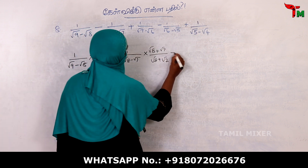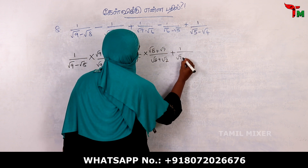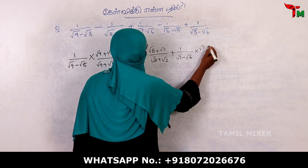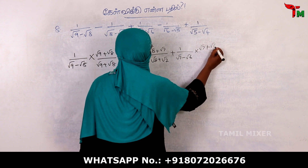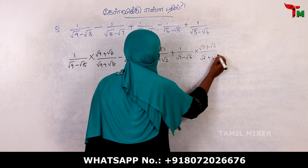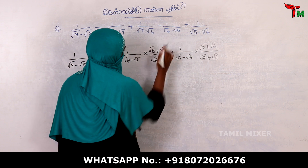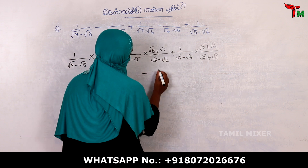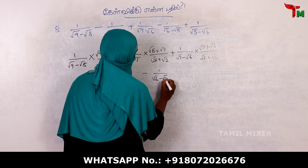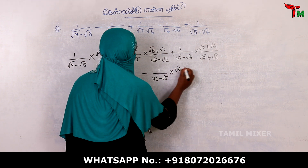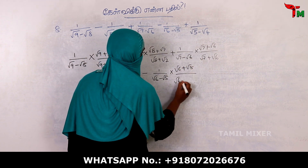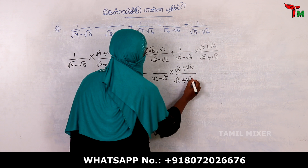So let's take 1 by root 7 minus root 6, multiplied by root 7 plus root 6, divided by root 7 plus root 6. Then 1 by root 6 minus root 5, multiplied by root 6 plus root 5, divided by root 6 plus root 5.